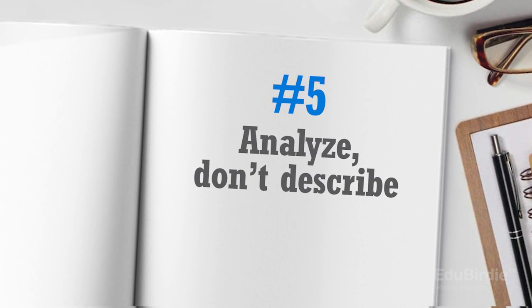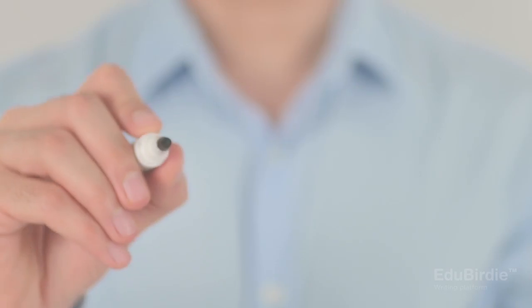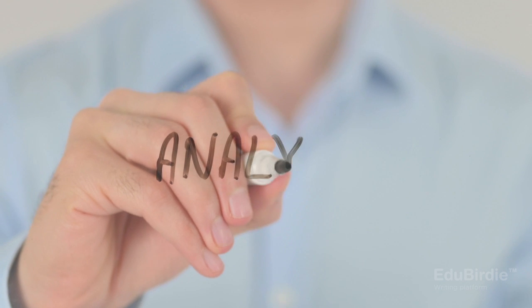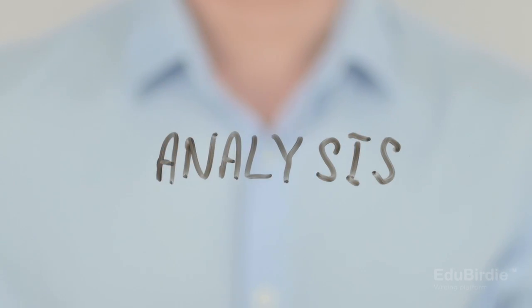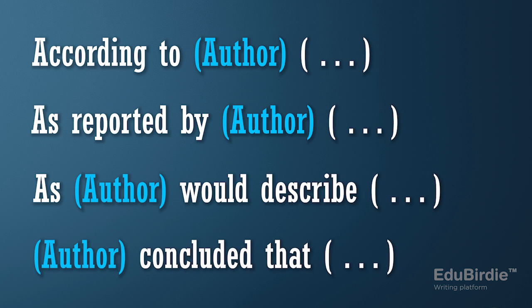Tip five: analyse, don't describe. A literature review isn't about summarising a book you read. One common problem most students have is describing what they read instead of evaluating it and comparing it to other literature. A good way to see if you're making this mistake is to check if all your paragraphs start with the name of the author. If they do, you probably need to rethink your approach and refocus your efforts on the central question.